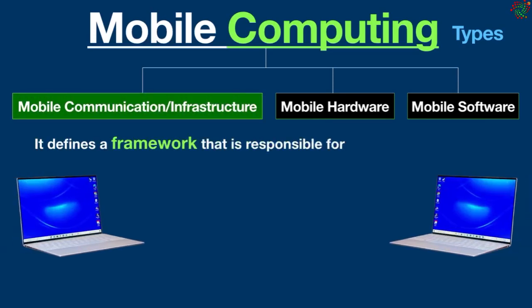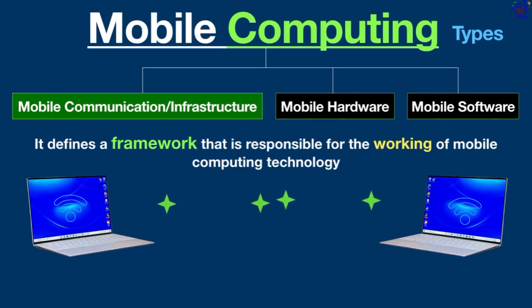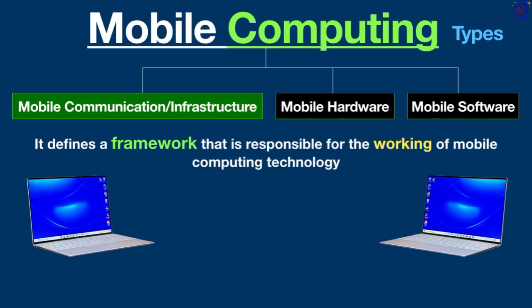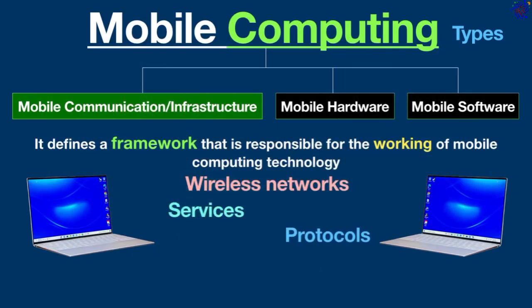Mobile communication or infrastructure defines a framework that is responsible for the working of mobile computing technology. Mobile communication refers to an infrastructure that ensures smooth and reliable communication between wireless devices. This framework also ensures consistency and reliability of communication among Wi-Fi devices. The mobile communication framework includes wireless networks, protocols, services, bandwidth, and data formats necessary to facilitate and support the stated services.